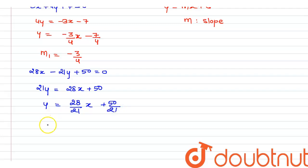So we have this slope. The second slope m₂ is equal to 28/21. By simplifying we get 4/3. So m₁ is -3/4 and m₂ is 4/3.